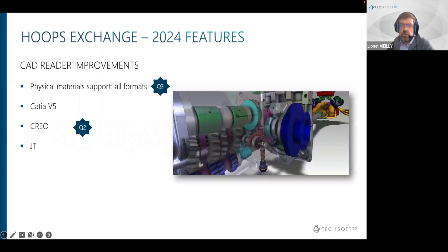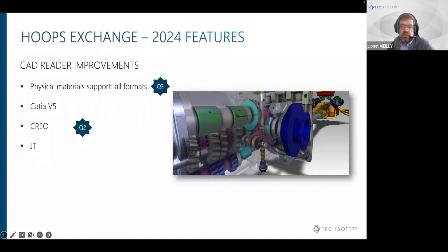Moving ahead to initiatives: on the CAD reader improvements theme, we have several projects. The first is to support the physical definition of materials for all CAD formats — meaning beyond the material name and density already supported, we will provide information like Poisson's ratio and Young's modulus, so applications in the analysis space can directly leverage them. For CATIA V5, we are planning to support what is called a publication name.